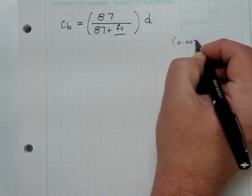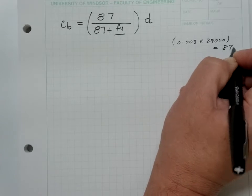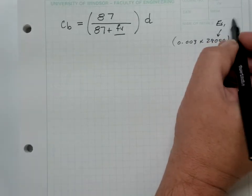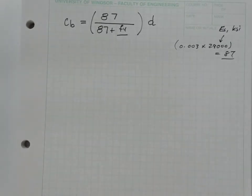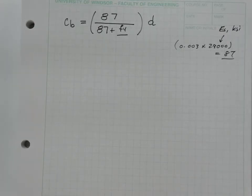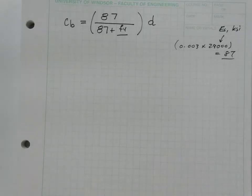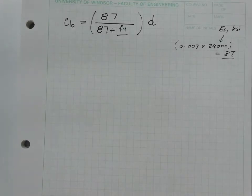Doing a bit of algebra — expanding and collecting all C terms — we get that C_b equals 87 divided by (87 plus F_Y) multiplied by D. Here, 0.003 times 29,000 equals 87, which is the modulus of elasticity of steel in kips per square inch. So now we know exactly where the balanced neutral axis depth is.